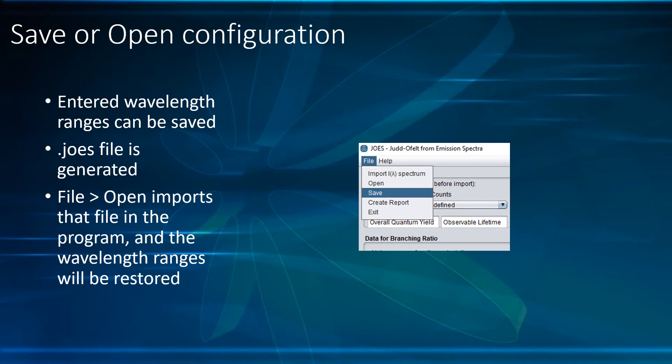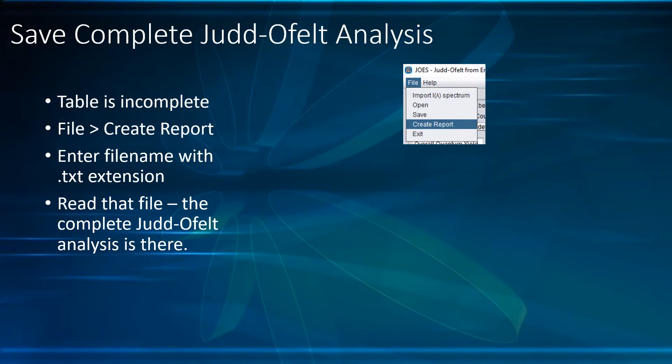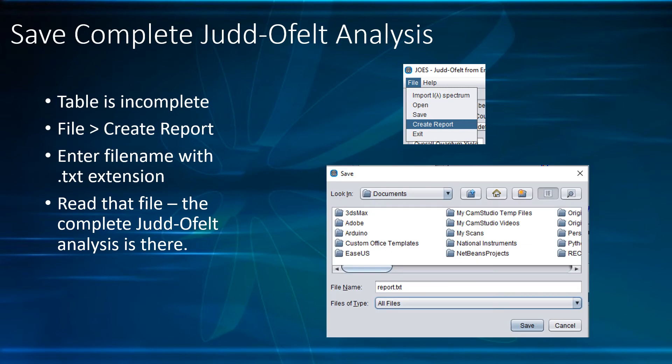To save the complete Judd-Ofelt analysis, click on File and Create Report. Enter the desired file name including the extension, and that file can be read in any text editor.